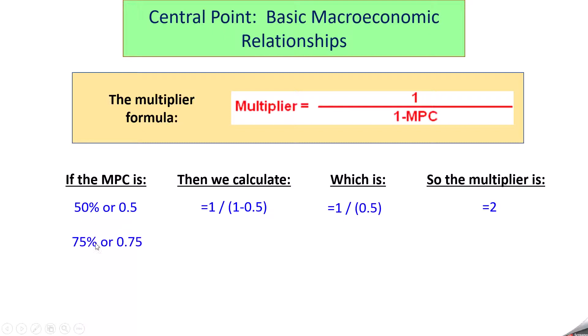If the MPC was higher, say 75%, we would calculate 1 over 1 minus .75 using that formula above, which is 1 over .25. And a quarter goes into $1 four times, so that's a 4. And in this economy, if the MPC was 75%, that $100 would turn into $400 in economic activity.